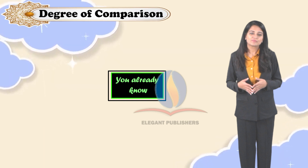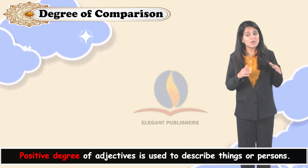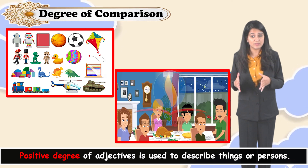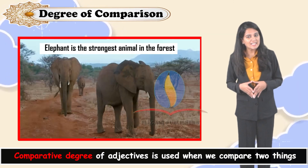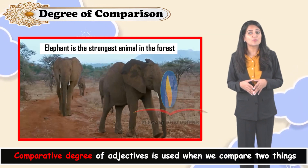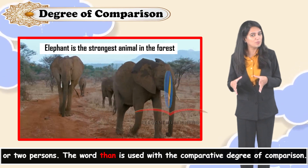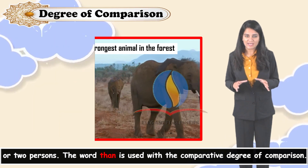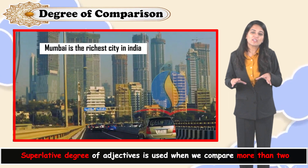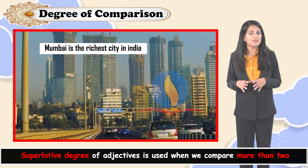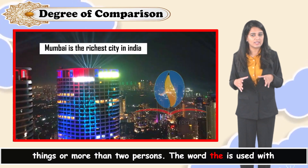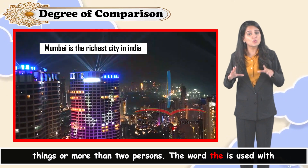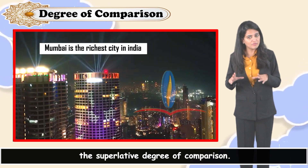Degree of comparison is used to describe things or persons. Comparative degree of adjectives is used when we compare two things or two persons. The word 'than' is used with the comparative degree of comparison. Superlative degree of adjectives is used when we compare more than two things or more than two persons. The word 'the' is used with the superlative degree of comparison.